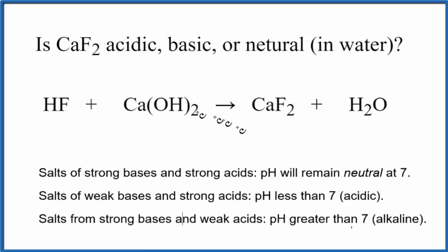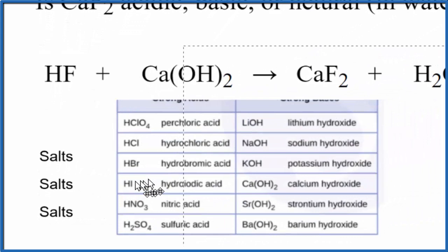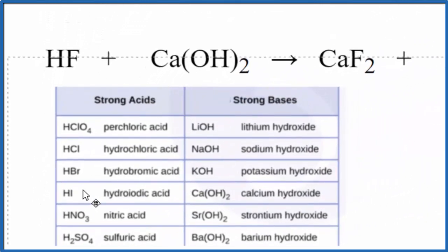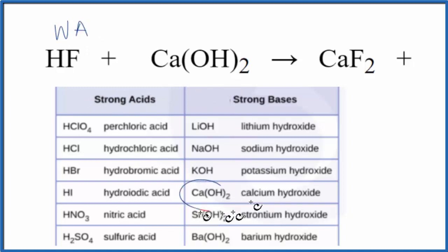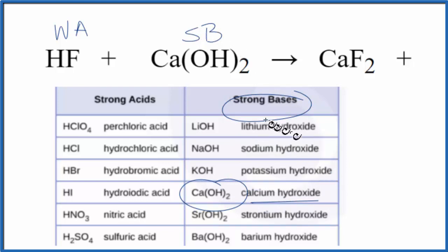Next, we need to figure out the strength of the acid and the base in order to use these rules. This table can be very useful in figuring the strengths out — I recommend you memorize it. We're looking for HF, and it's not listed as one of the strong acids, so this is a weak acid. Calcium hydroxide, right here, is a strong base. So we have a weak acid and a strong base.